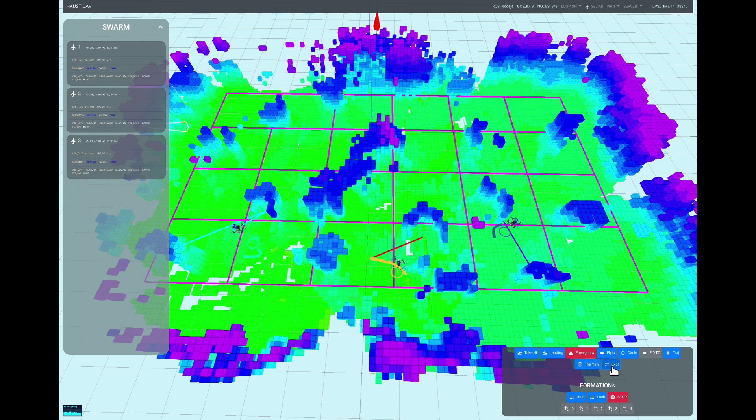Another typical task is cooperative exploration of unknown space. When drones fly far away from each other in this task, relative localization accuracy is not important, and global consistency is more important.